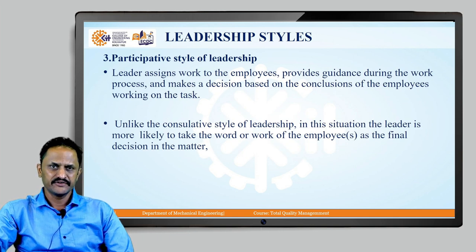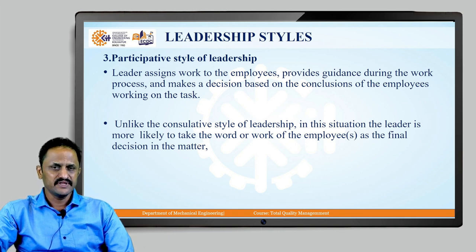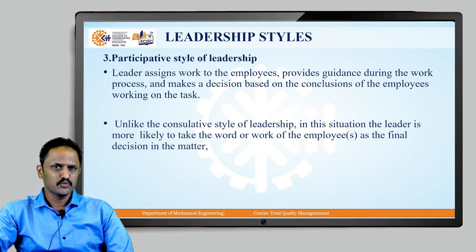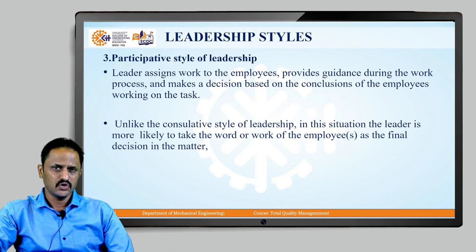Next is the participative style of leadership. Here the leader tries to assign work to all the employees, provides guidance during the actual work situation, and ultimately makes decisions based on conclusions received from those employees working on the task. Unlike the conciliative style, here the leader is more likely to take the final word from the employees themselves and the work they produce, and based on that the final decision is taken.